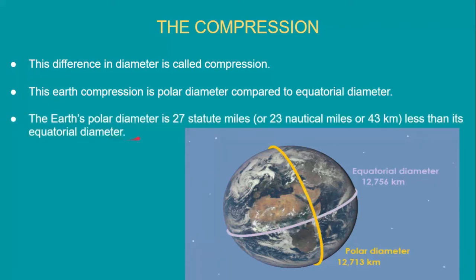The earth's polar diameter is 27 statute miles, or 23 nautical miles, or 43 km less than its equatorial diameter. So the equatorial diameter is 43 km larger than the polar diameter.